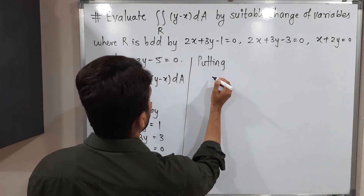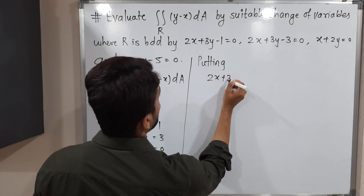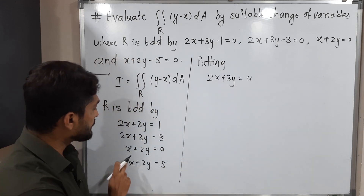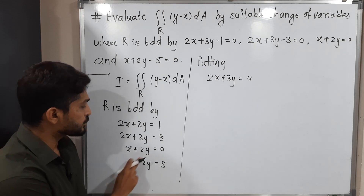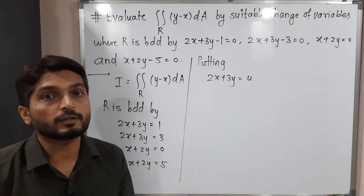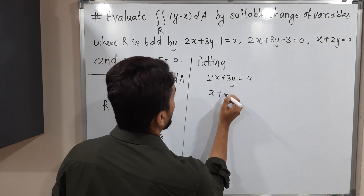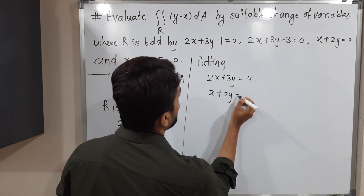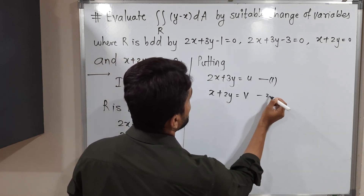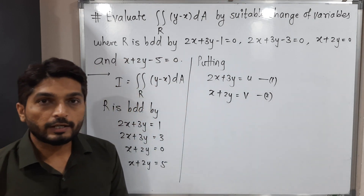So putting 2x plus 3y equal to u (equation 1), and there is one more repeating term: x plus 2y also appears two times, so we put x plus 2y equal to v (equation 2).